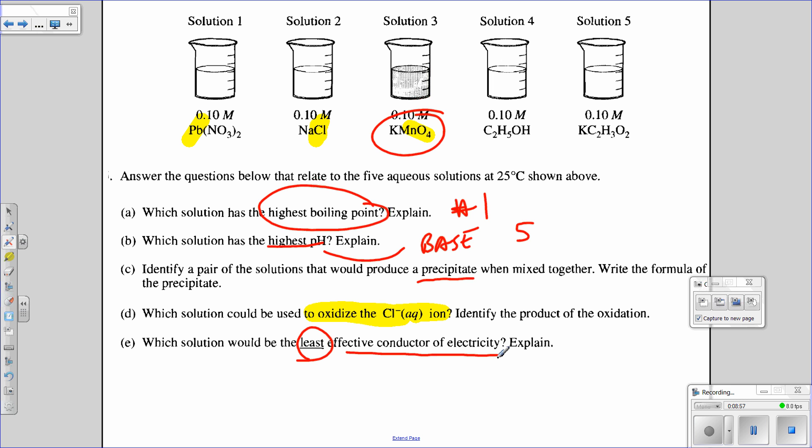Least effective electrical conductor of electricity. More ions, more conductivity. Remember, this is an alcohol or a non-electrolyte, so solution four would be your correct answer.